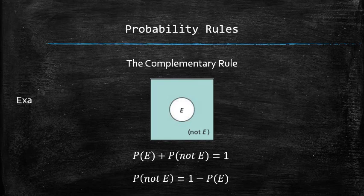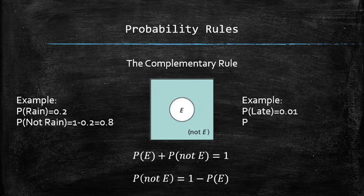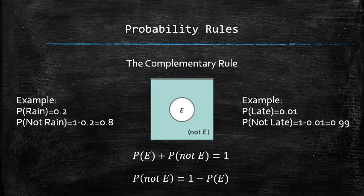For example, if the probability of rain is 0.2, then the probability of no rain is 1 − 0.2 = 0.8. Another example: if the probability of something being late is 0.01, then the probability of it not being late is 1 − 0.01 = 0.99.